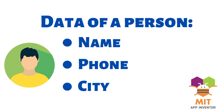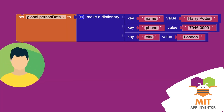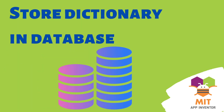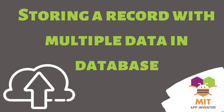In a dictionary, we can assign a unique key to each piece of information. So name can be the key for the person's name, phone number can be the key for their phone number, and city can be the key for their city. Using a dictionary block, we can create this collection of information, associate each key with its corresponding value, access or modify specific values by referring to their keys, and even store this dictionary in a database such as TinyDB or CloudDB.